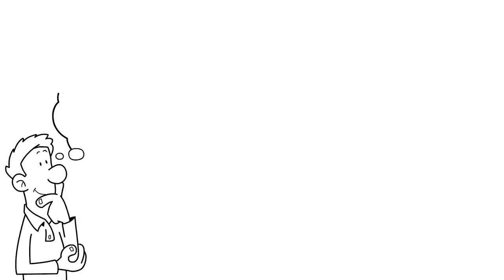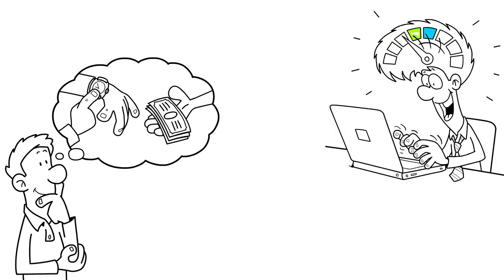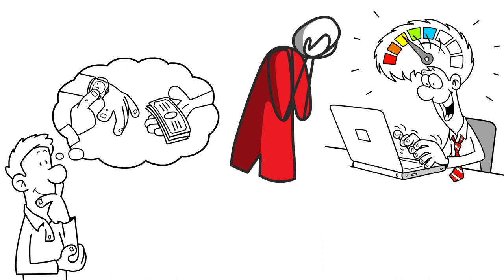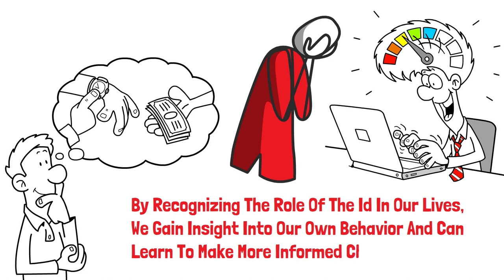Understanding the id can help us make sense of our impulsive actions and desires. It's the reason we sometimes do things on a whim, even when it goes against our better judgment. By recognizing the role of the id in our lives, we gain insight into our own behavior and can learn to make more informed choices.